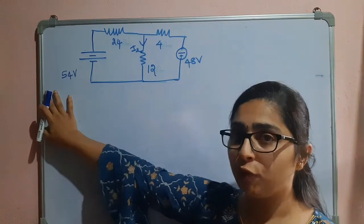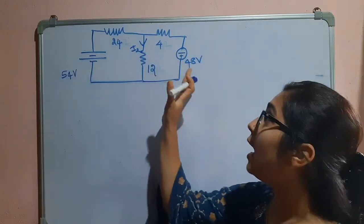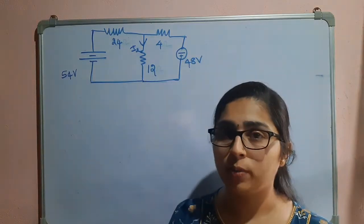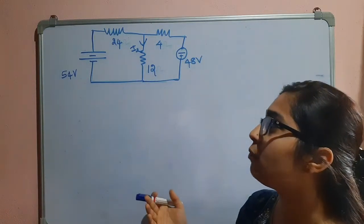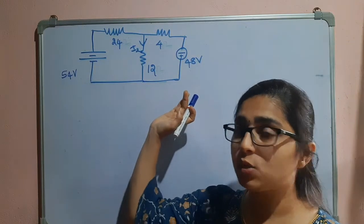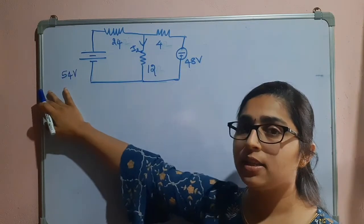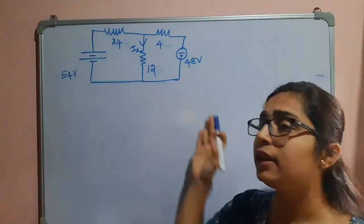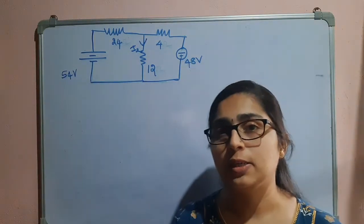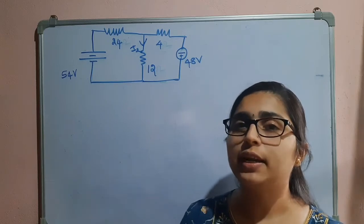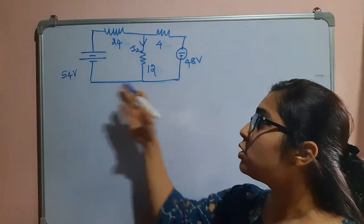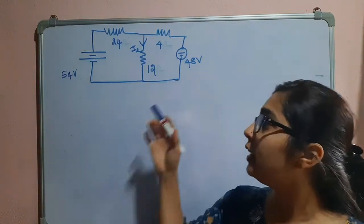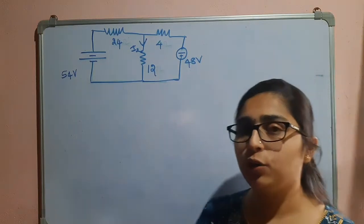We will consider only one source at a time. If I am considering the 54V source, I have to short the 48V source and find the current through the 12 ohm resistor. In the second step, I will consider the 48V source but short the 54V source and find the current through the 12 ohm resistor. Finally, using the additivity property, the currents from both sources will be added to find the resultant I2.